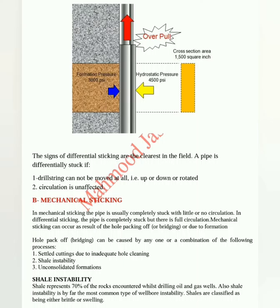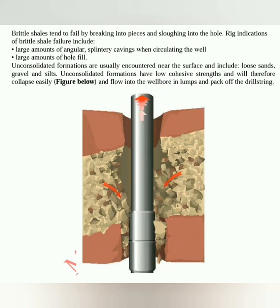Shale instability. Shale represents 70% of the rocks encountered whilst drilling oil and gas wells, and shale instability is by far the most common type of wellbore instability. Shales are classified as being either brittle or swelling. Brittle shales tend to fail by breaking into pieces and sloughing into the hole. Rig indications of brittle shale failure include large amounts of angular, splintery carvings when circulating the well.